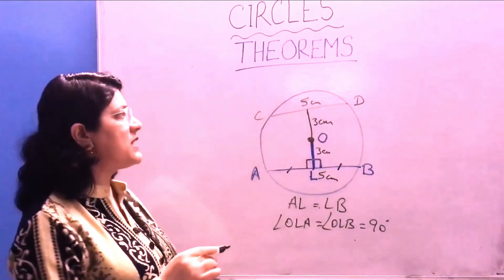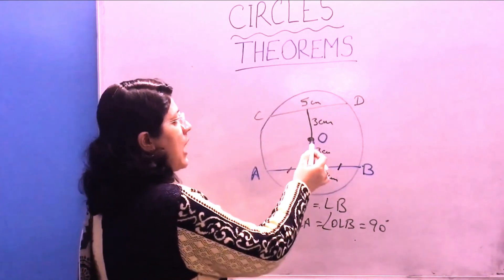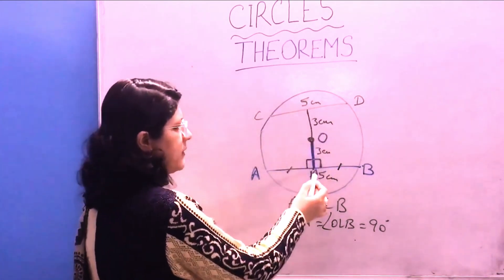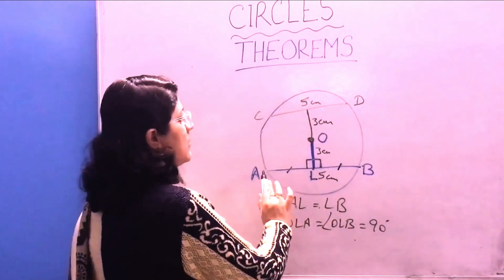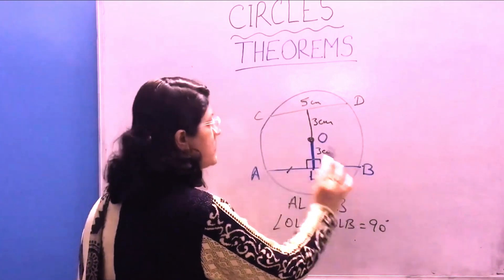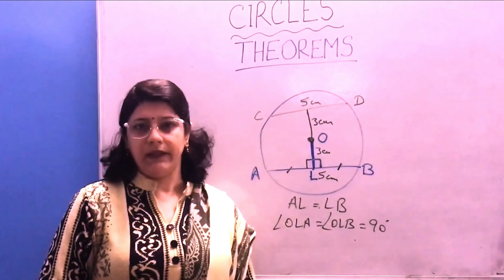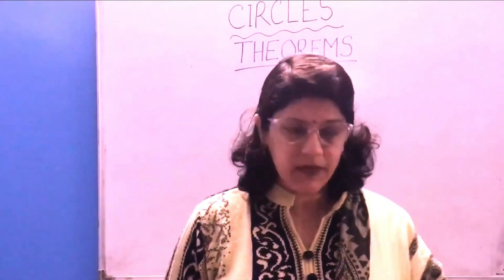So this is our second theorem: equal chords are equidistant from the center. Or vice versa, if it is given that chords are equidistant from the center, then the chords are equal in length.